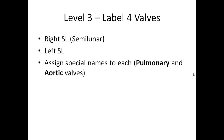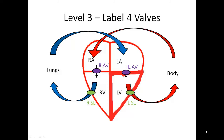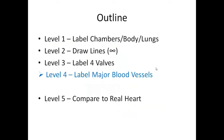The semilunar valves each have special names — one pulmonary and one aortic. Pulmonary means going to the lungs, so the right SL valve going to the lungs is called the pulmonary valve, also called the pulmonic valve. On the other side, you have the aortic valve, because it's part of the aorta. Your diagram should now show the infinity sign over the chambers plus all four valves labeled, including the alternative names bicuspid/mitral, tricuspid, pulmonary, and aortic. That's it for level three.